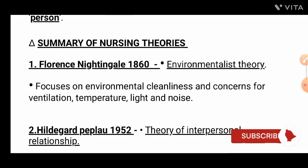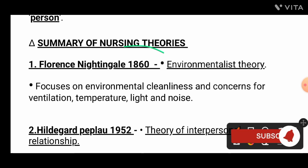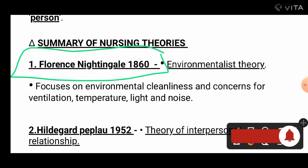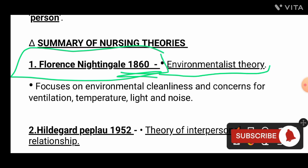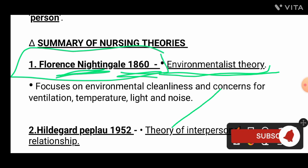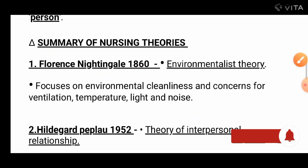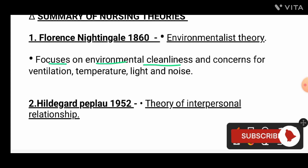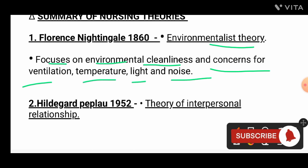Let's look at the summary of nursing theories. The first theory is given by Florence Nightingale in 1860 — the Environmental Theory. In the exam, the question will be: the environmental theory was given by which theorist? The answer is Florence Nightingale. This theory focuses on environmental cleanliness and concern for ventilation, temperature, light, and noise.